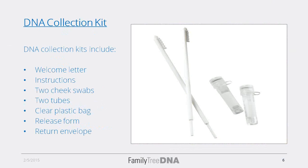Once you receive your kit in the mail, you'll open it up and find multiple items inside. Our DNA collection kit includes a welcome letter, instructions for swabbing and mailing your DNA samples back to us, two cheek swabs — which you can see pictured here on the screen — two tubes that include a preservative liquid, a clear plastic bag which you'll seal the completed samples into, a green release form that allows us to share your contact information with your DNA matches, and a return envelope.